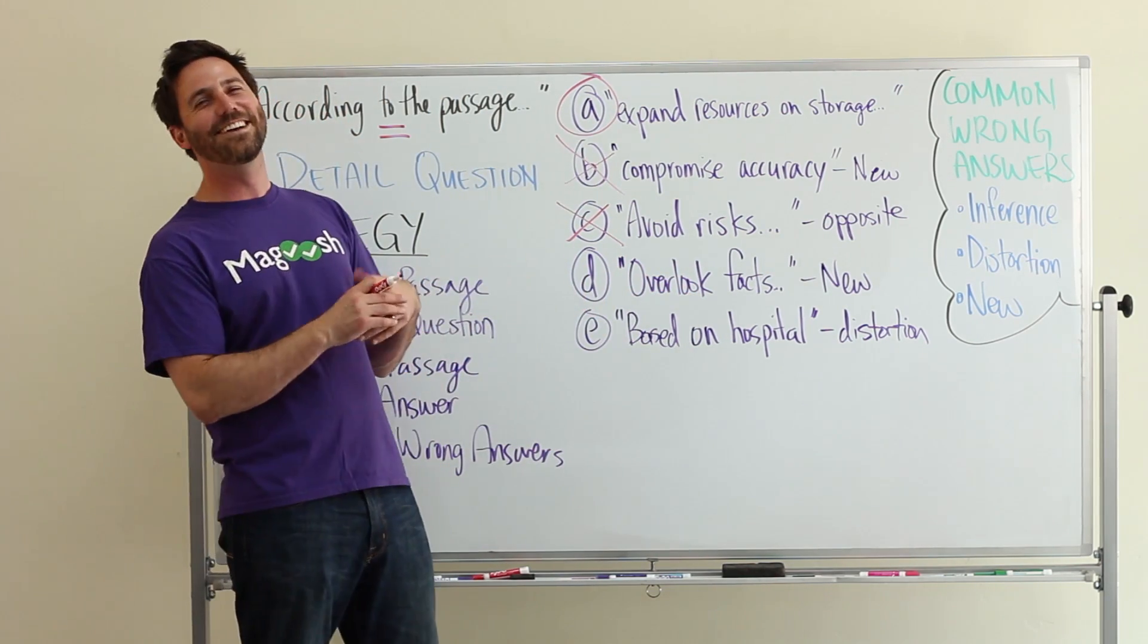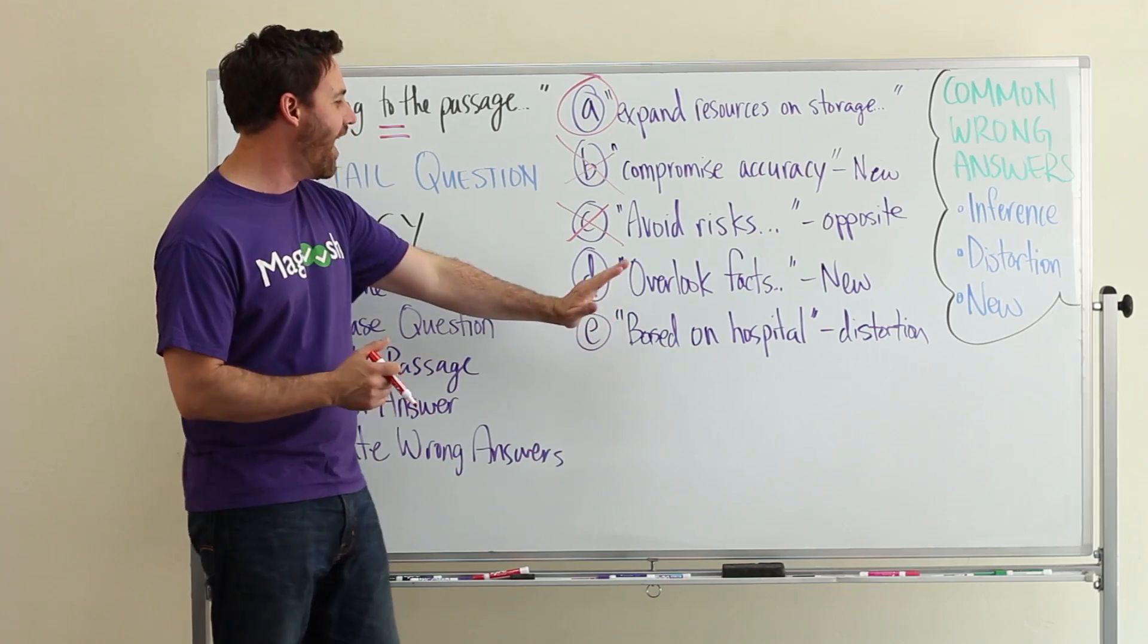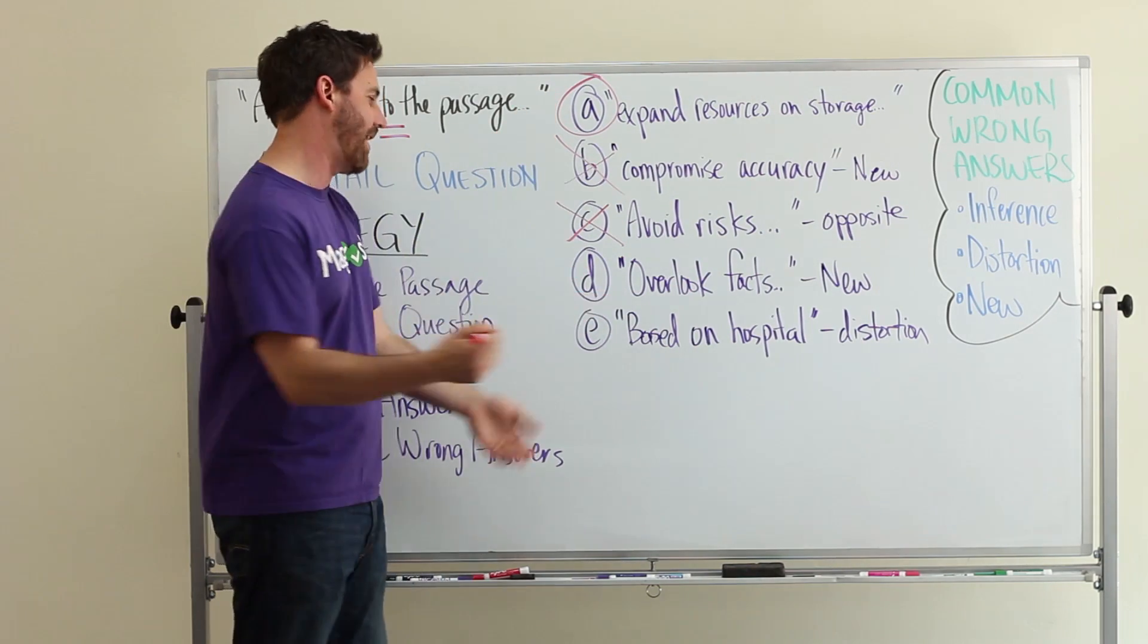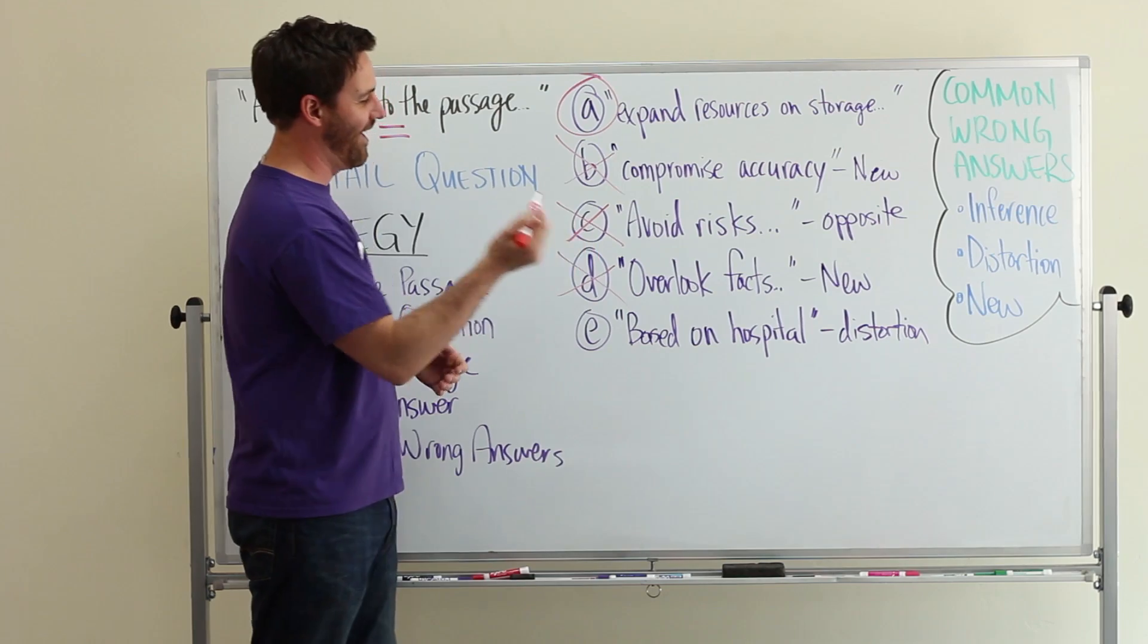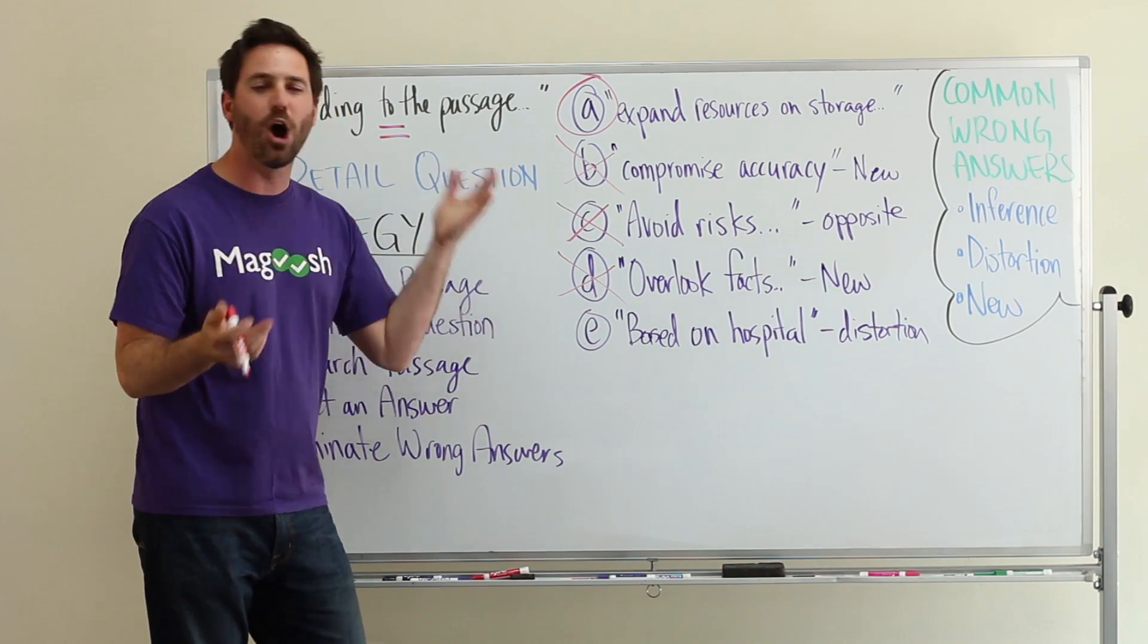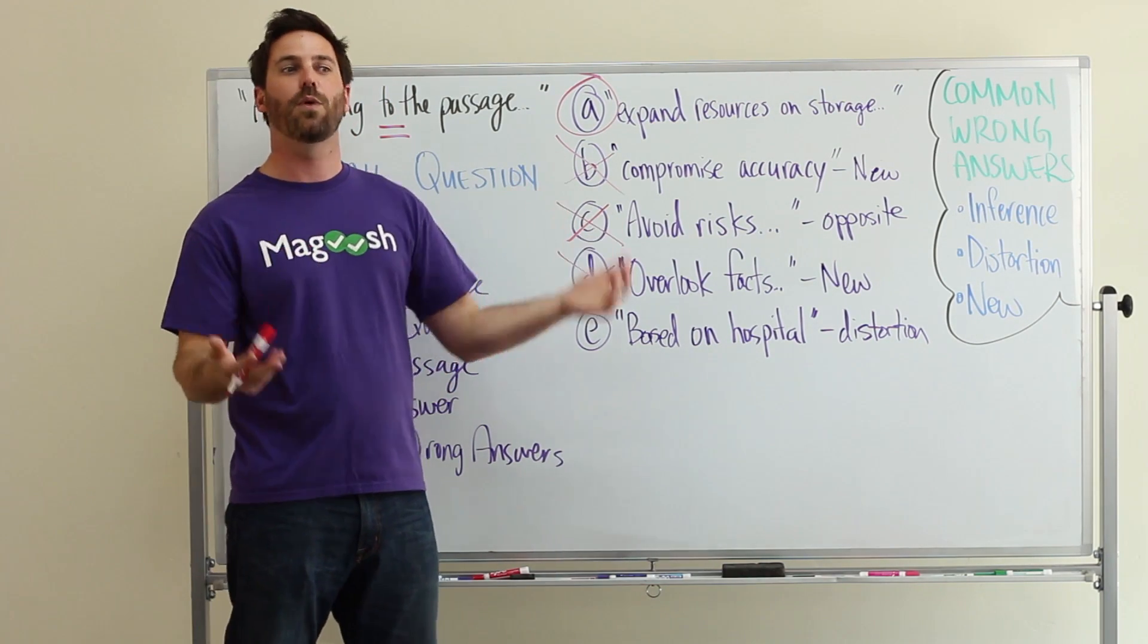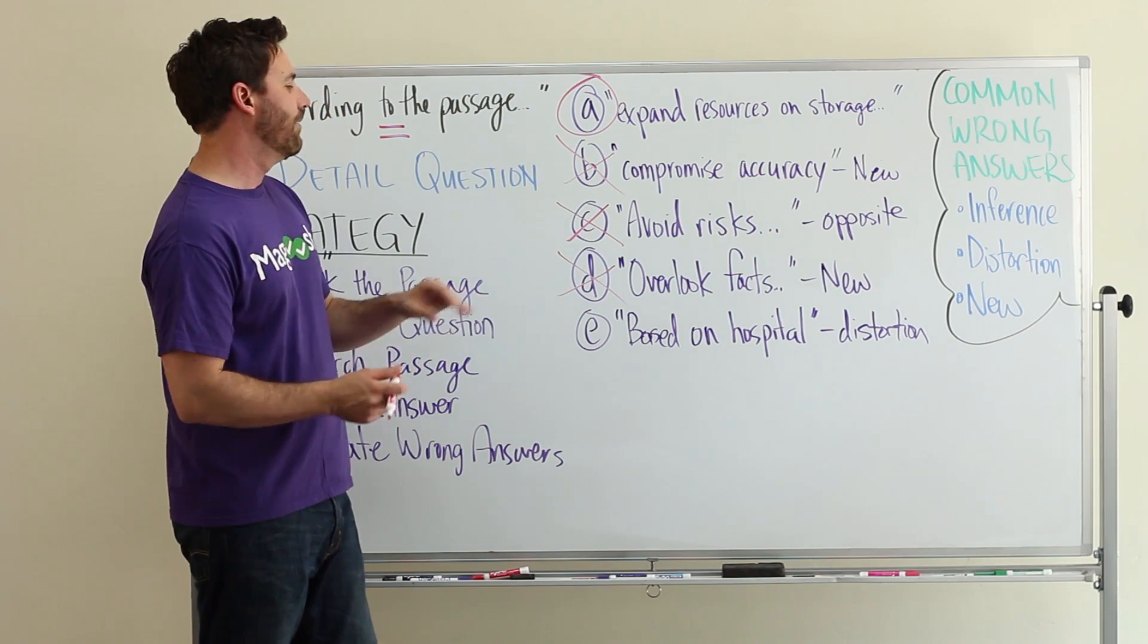D: Overlook facts. There's nothing in the passage that talks about this. There's no mention of them overlooking facts because of the way that they collect information. So we can eliminate D.